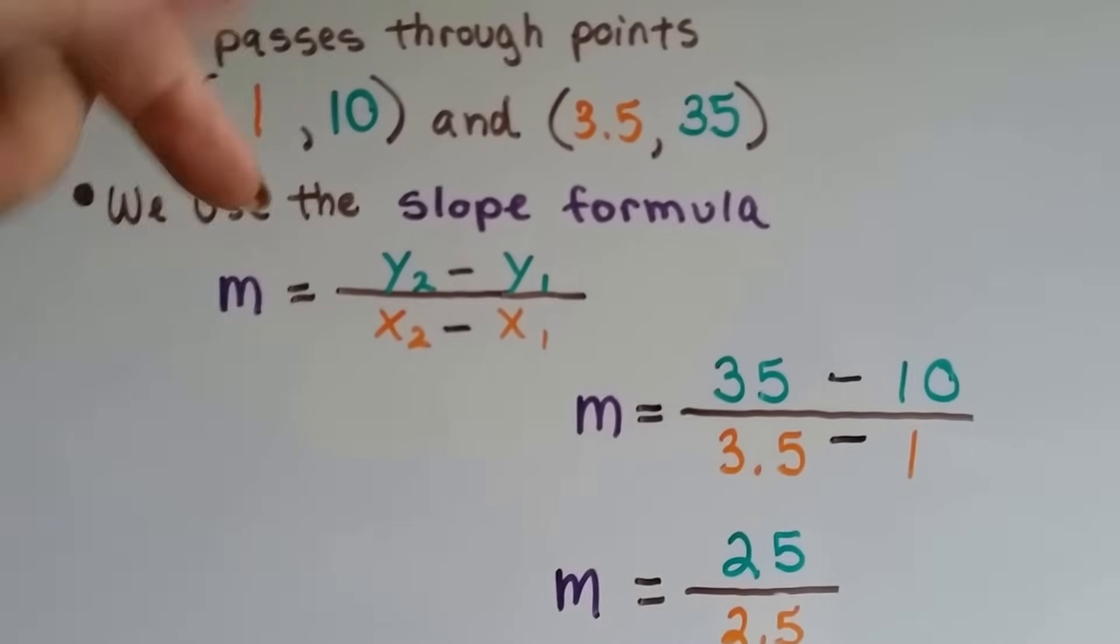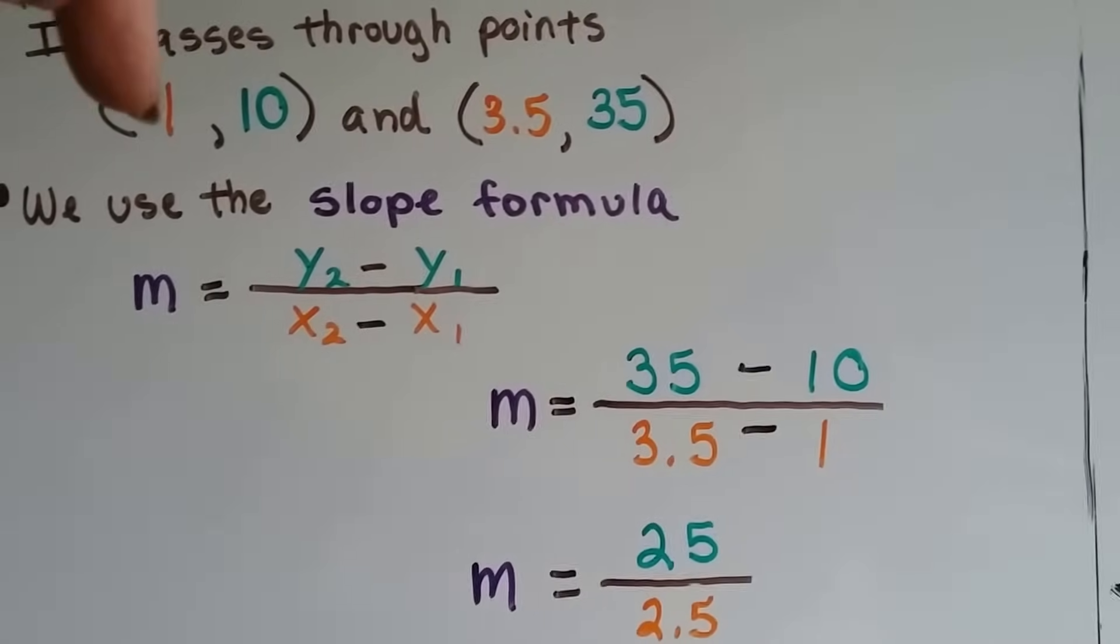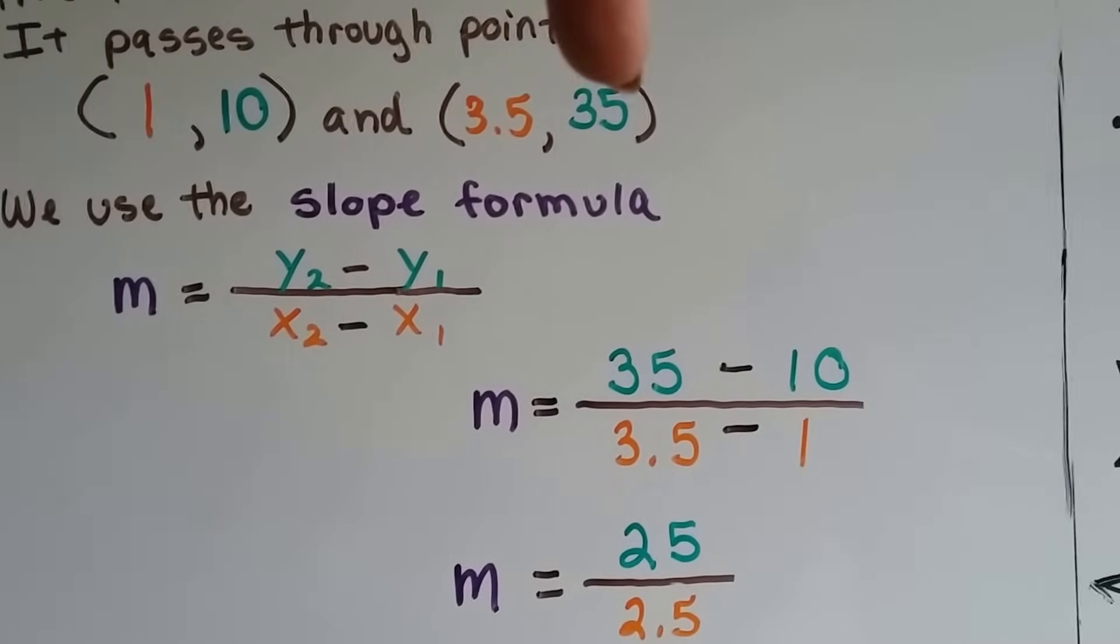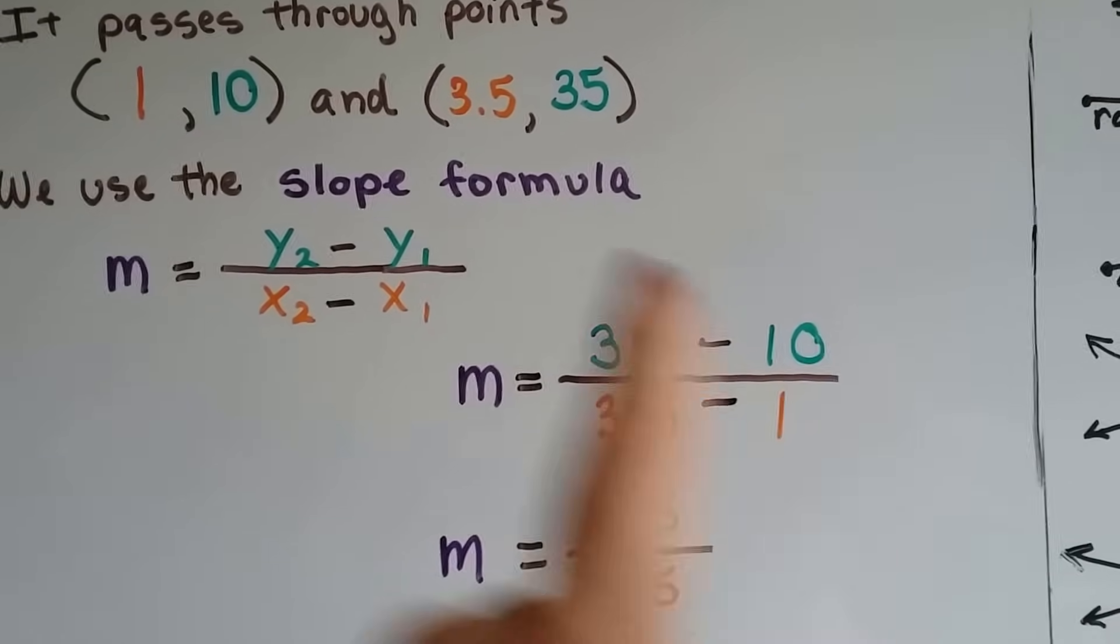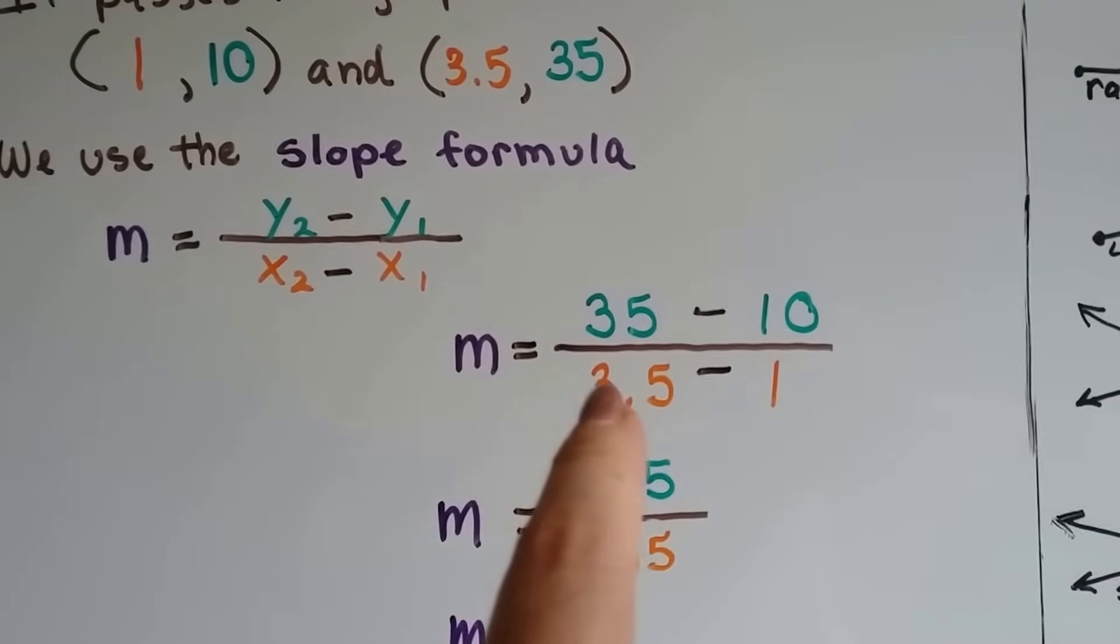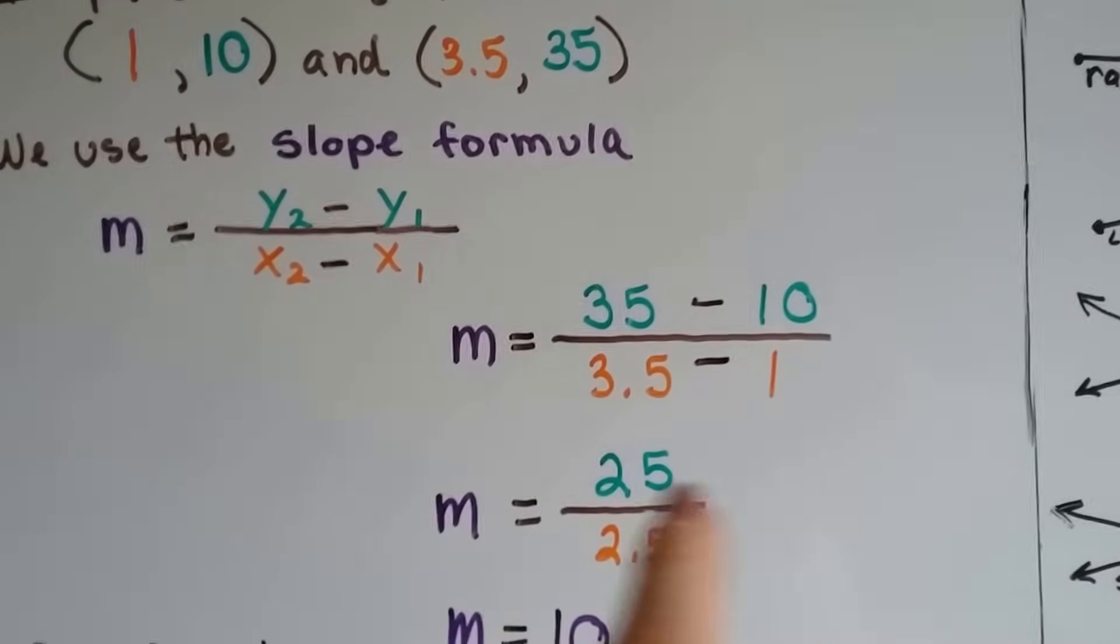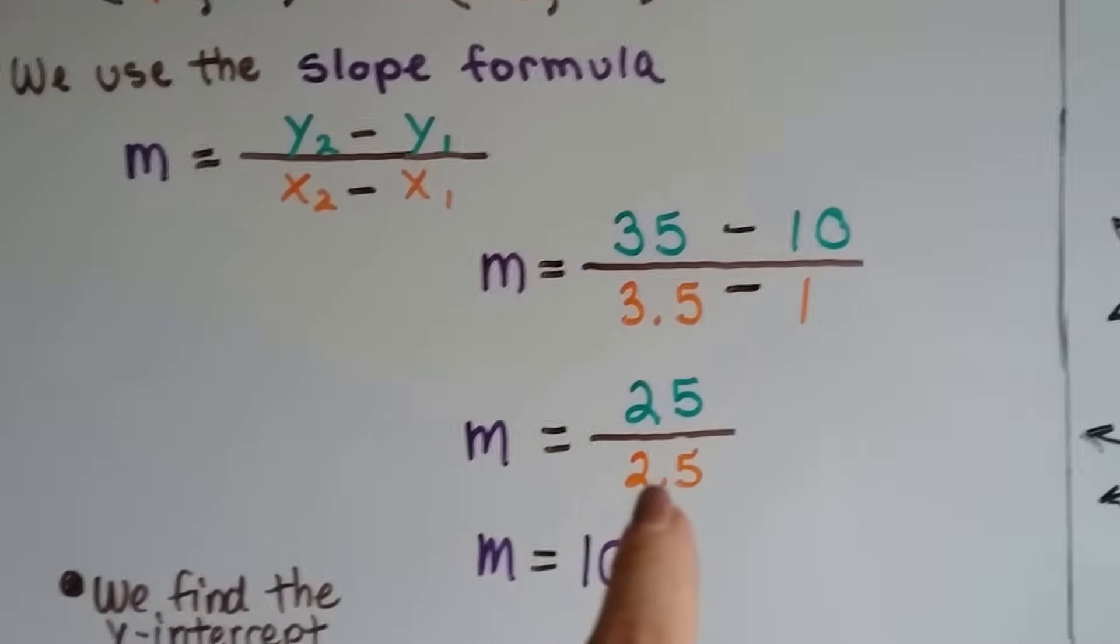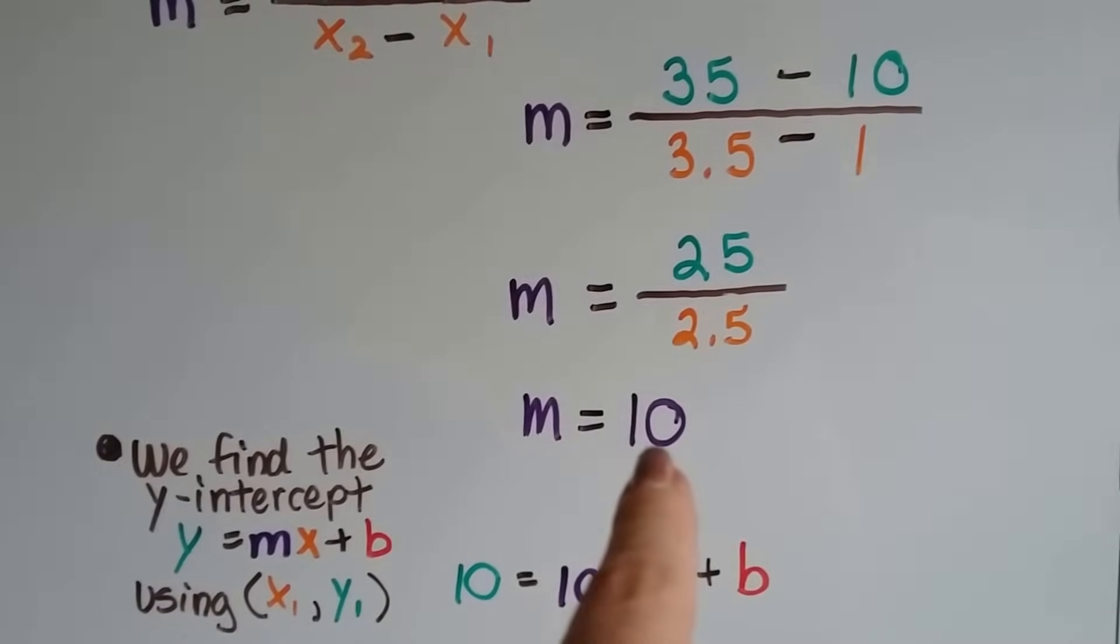And, all we have to do is plug those numbers in. So, this is x1, y1, x2, y2. So, y2 is 35 minus y1, 10. 35 minus 10 is 25. x2 is 3.5 minus x1, the 1. 3.5 minus 1 is 2.5. And, we just do the math. 25 divided by 2.5 is 10.